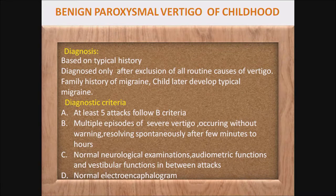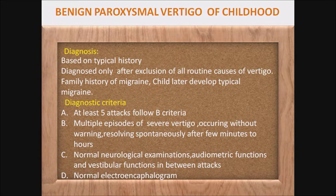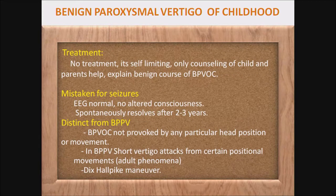Diagnostic criteria for BPVOC — there are 4 criteria. Criteria A: at least 5 attacks fulfilling criteria B. Criteria B: multiple episodes of severe vertigo occurring without warning, spontaneously resolving after a few minutes to hours. Criteria C: normal neurological examination, audiometric function, and vestibular function between attacks, plus normal EEG. Treatment: usually no treatment is required because it is a self-limiting condition. Only counseling of the child and parents is helpful — explain the benign course of BPVOC.